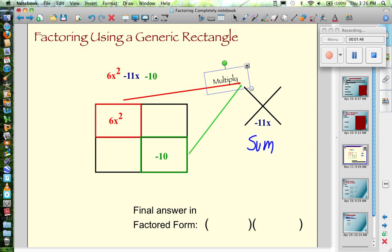So if I multiply the two diagonals that I know, that's going to be the same as the product of the two that I don't know. So it's kind of like now I have a little puzzle. I have to try to find two numbers so that when I multiply I get negative 60 and when I add I get negative 11.